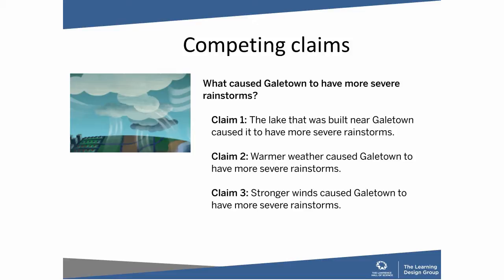Here's an example from our weather patterns unit. Students start off being presented with a scenario of a fictional town called Gale Town that's been having more severe rainstorms over the past years. Students need to come up with an explanation, and they're presented with competing claims: one, that a lake built near Gale Town caused the severe rainstorms; two, that warmer weather caused it; and three, that stronger winds caused it. By setting up these competing claims, students now have a concrete reason to gather evidence to figure out which claim is best supported.